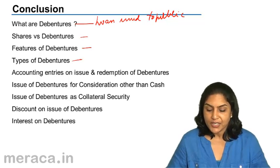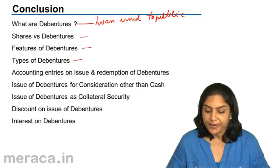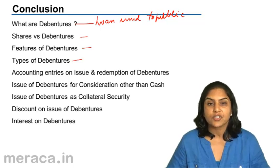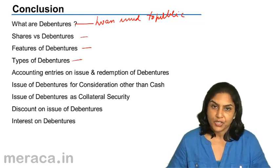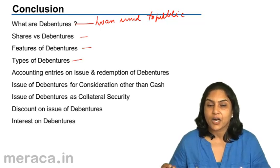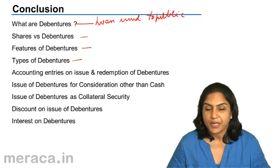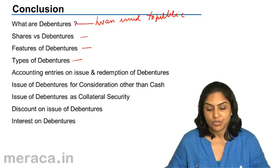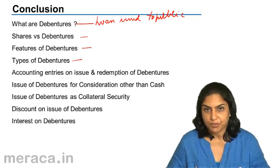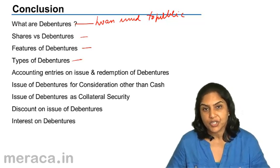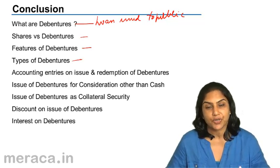We then discussed the accounting entries on issue and redemption of debentures. On issue for cash: bank account is debited to debentures if issued at par; bank account debited to debentures and securities premium if issued at a premium; and bank account debited along with discount account debited to debentures if issued at a discount.